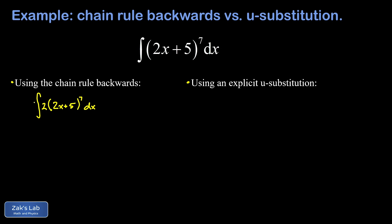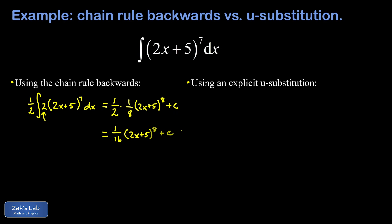Of course, you can't just go around multiplying things by 2 whenever you want. You have to compensate out in front with a factor of one half. Now that I've taken care of the consequences of the chain rule — that's the derivative of the interior function — it makes it very simple to guess the antiderivative. The one half out in front is a spectator, and the antiderivative is just one eighth times the interior function, 2x plus 5 to the 8th power — applying the power rule. We can clean things up to one sixteenth times the quantity 2x plus 5 to the 8th plus C.